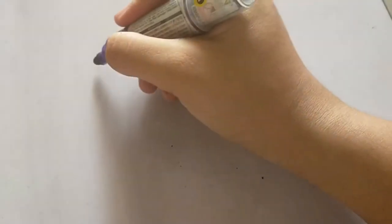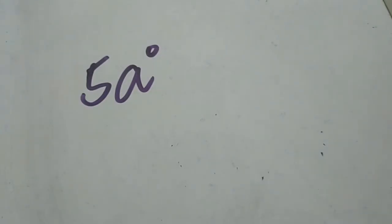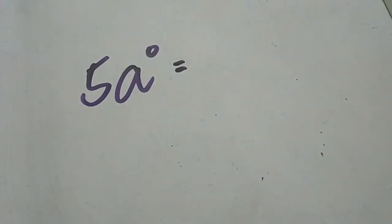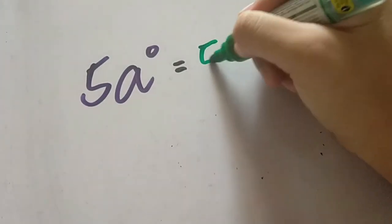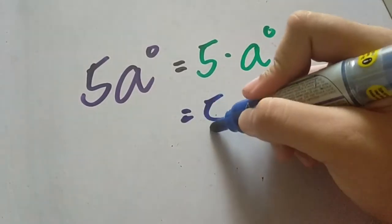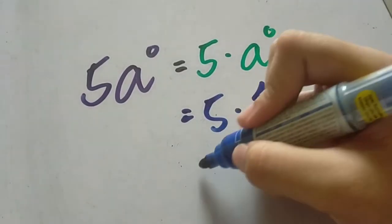What about this one? We have 5a raised to 0. In this case, take note, do you see any grouping symbols? No. Therefore, the number that is being raised by 0 here is a only. We have 5 times a raised to 0, and take note, all numbers that are raised by 0 is equal to 1. So we have 5 times 1, so the answer here is not equal to 1 but instead it is equal to 5.